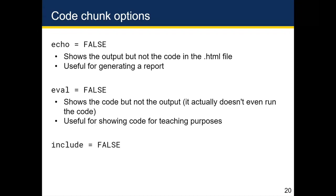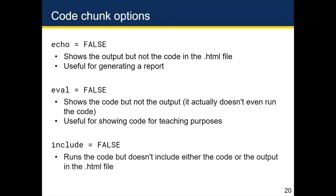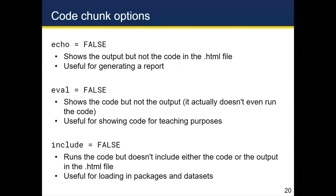The last option, which you'll use in the very first chunk of your R Markdown documents, is include equals false. This runs the code but doesn't include either the code or the output in the HTML file. This is primarily useful when loading in packages and data sets, because in case any of those packages have output associated with them, you don't want that extraneous output to end up in your R Markdown document, which someone who doesn't know R might not know what to make of.